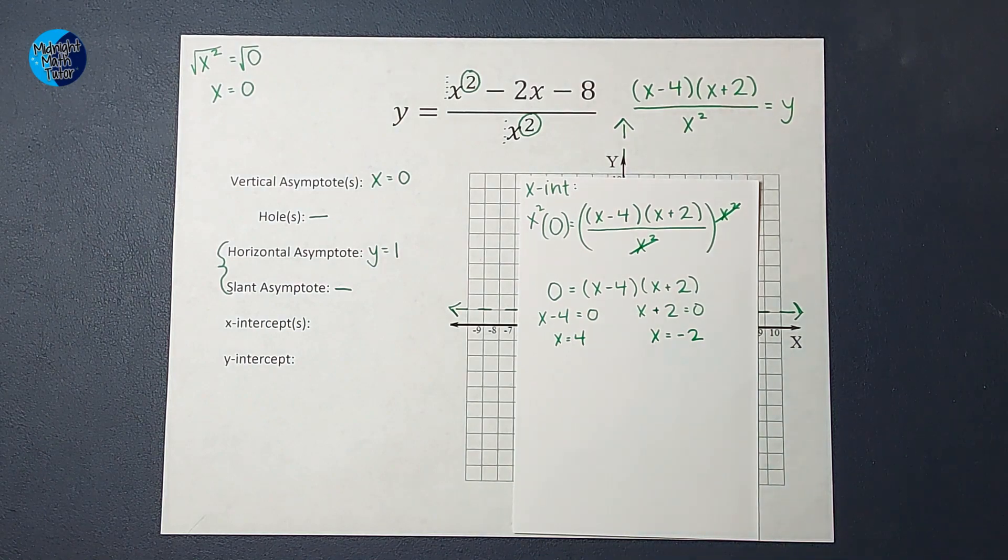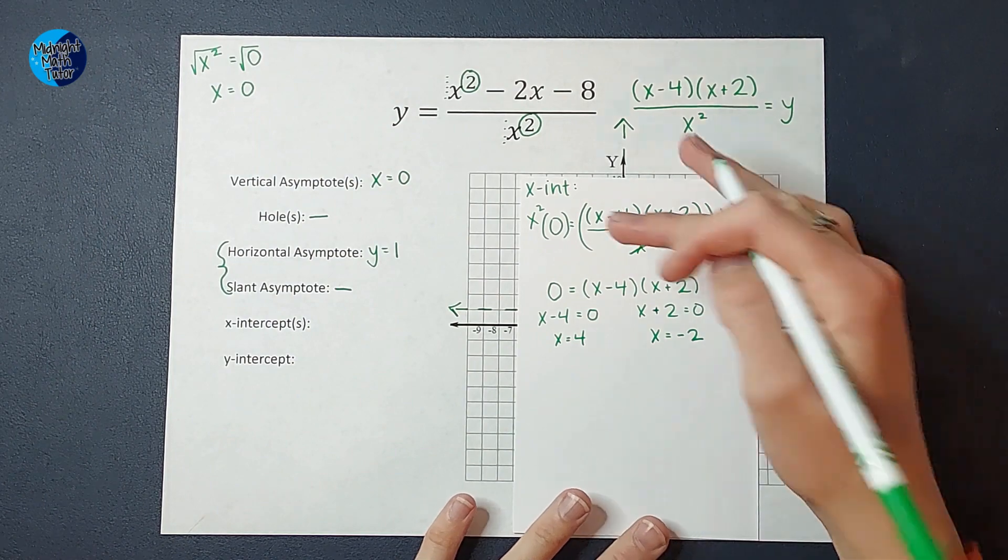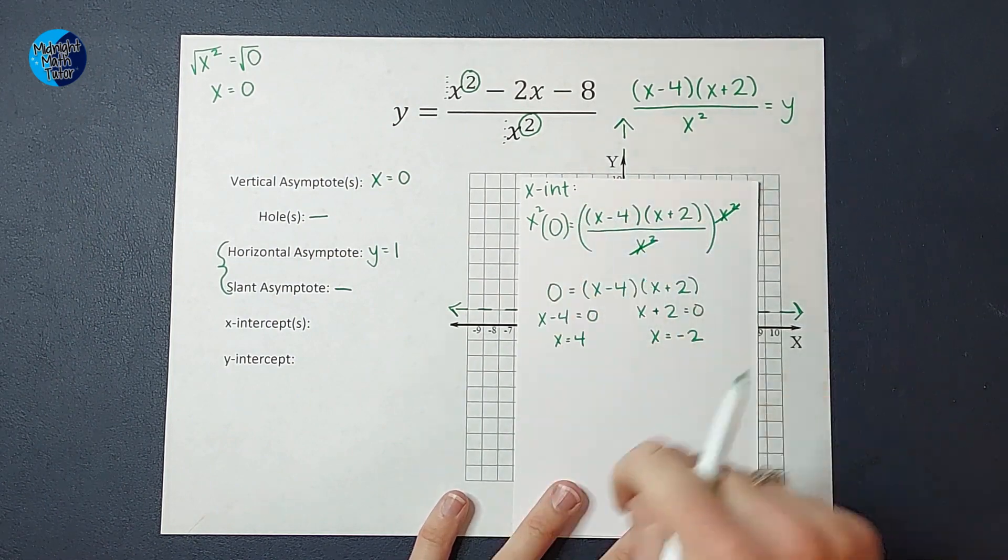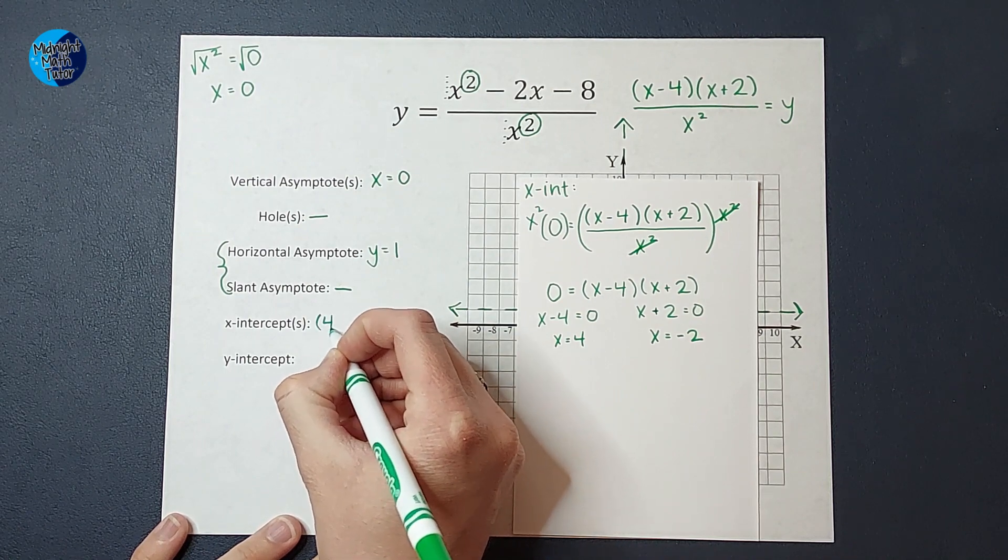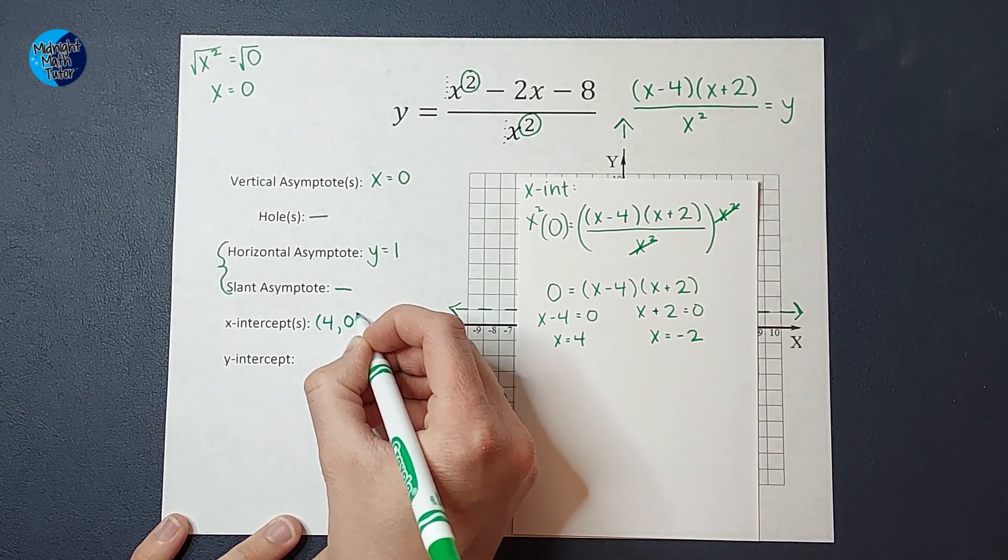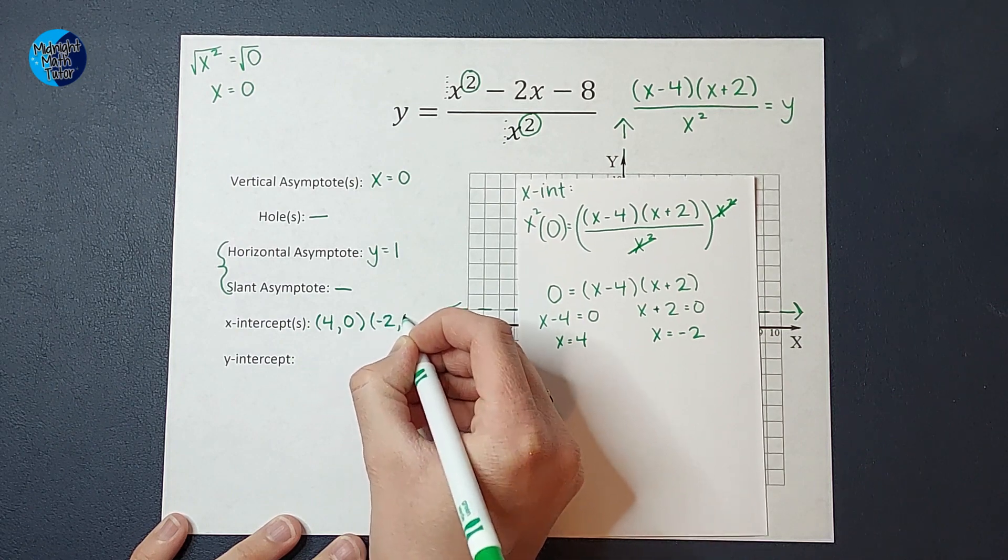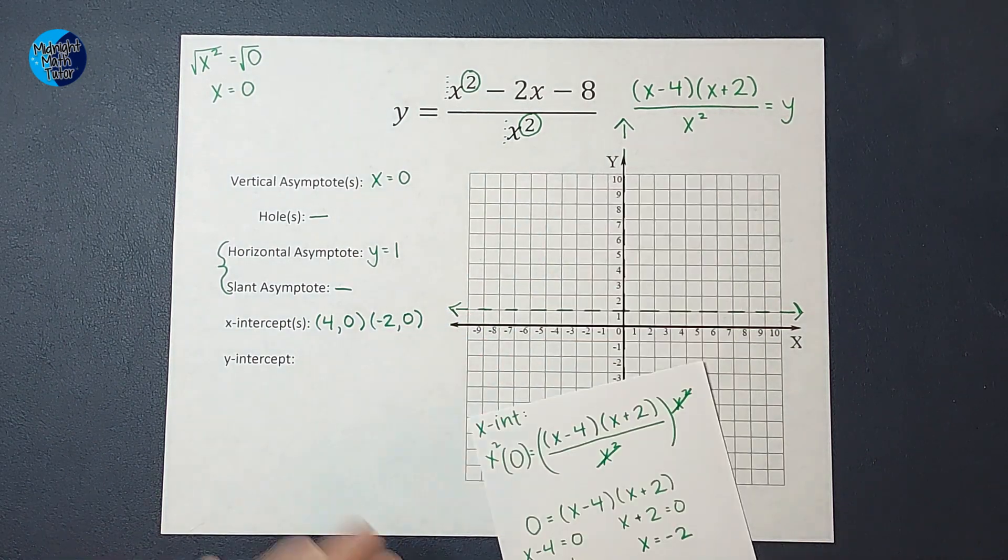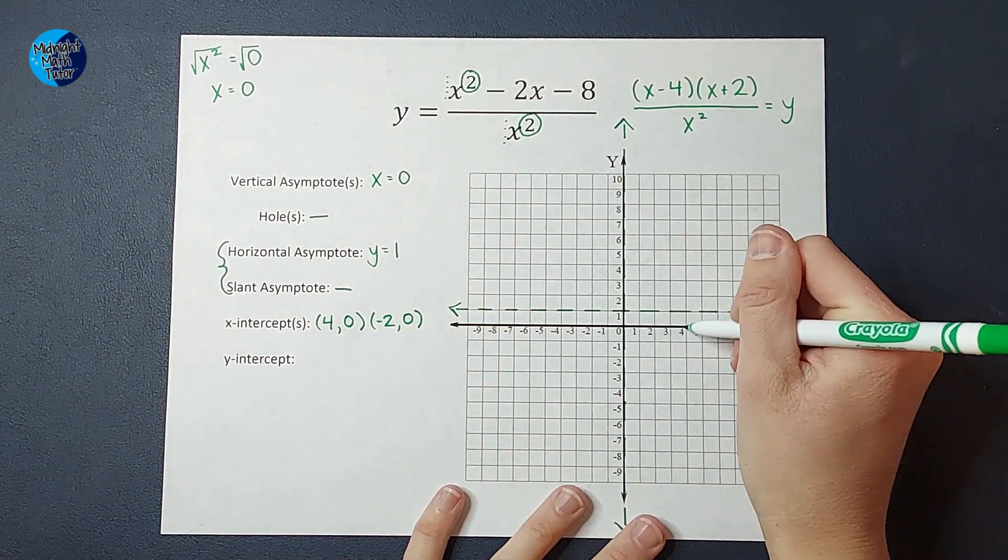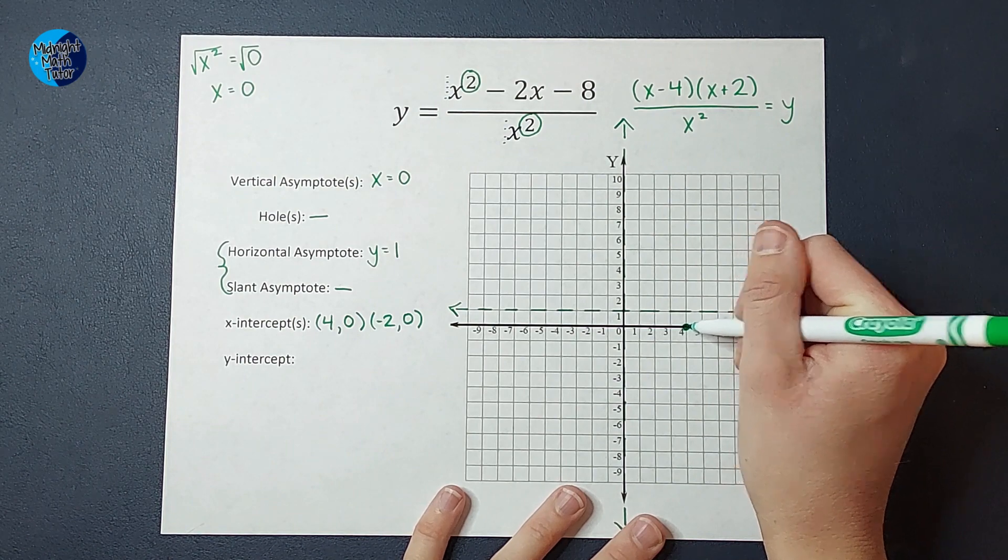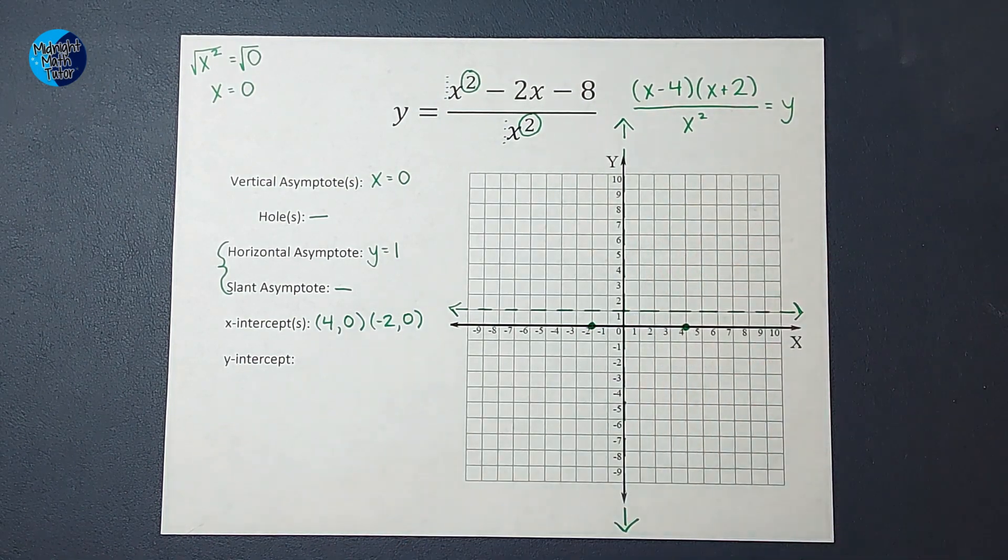All right. Those are my x-intercepts. These aren't lines like these guys were. These are points. When I plugged in zero for y, I got two x's. I got four and negative two. So I got four for x when I plugged in zero for y, and I also got negative two for x when I plugged in zero for y. All right. So let's go ahead and show these. So I'm going to have four zero and negative two zero.